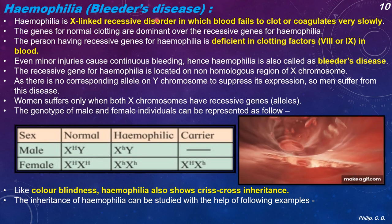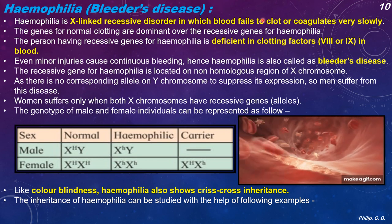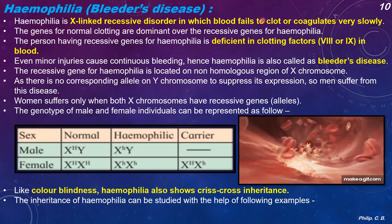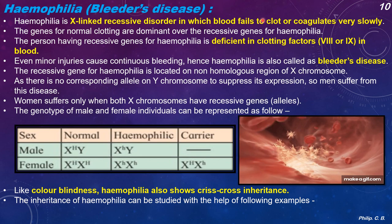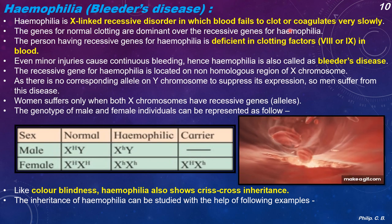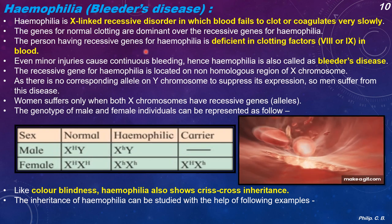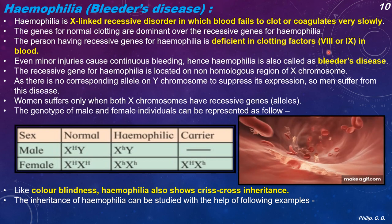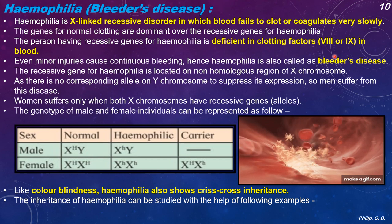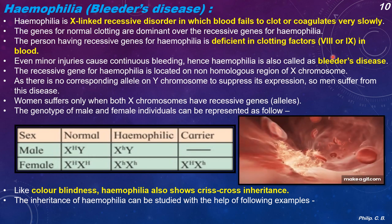Next is hemophilia, also called bleeders disease. In normal individuals a cut or wound leads to blood clotting, but in hemophilia the blood flows and will not stop because the clotting factor is absent. Hemophilia is an X-linked recessive disorder in which blood fails to clot or coagulates very slowly. The genes for normal clotting are dominant over recessive genes for hemophilia. The person having recessive genes for hemophilia is deficient in clotting factor 8 or 9 in the blood, and even minor injuries can cause continuous bleeding — hence it is called bleeders disease.